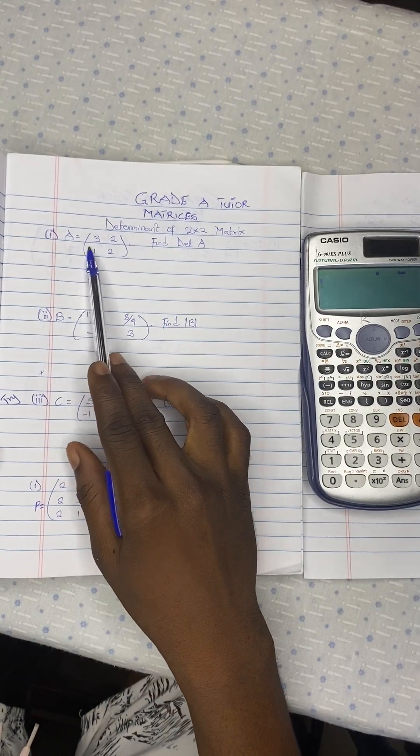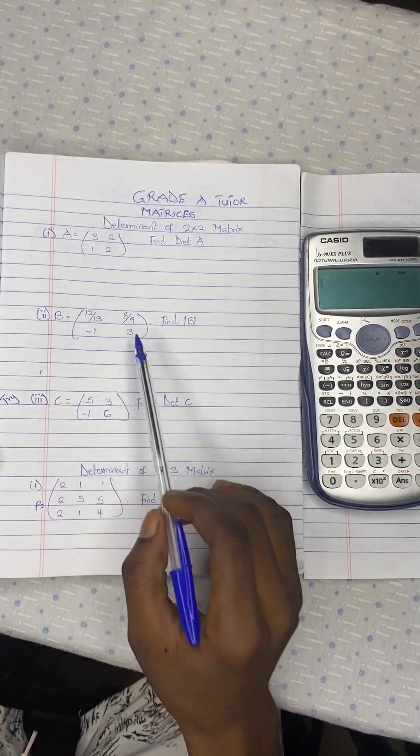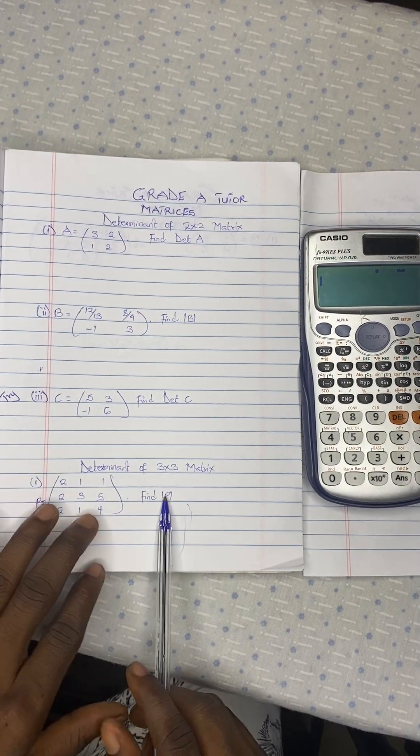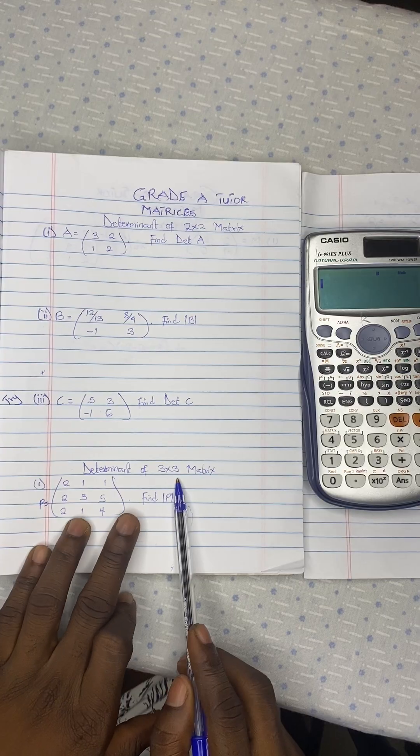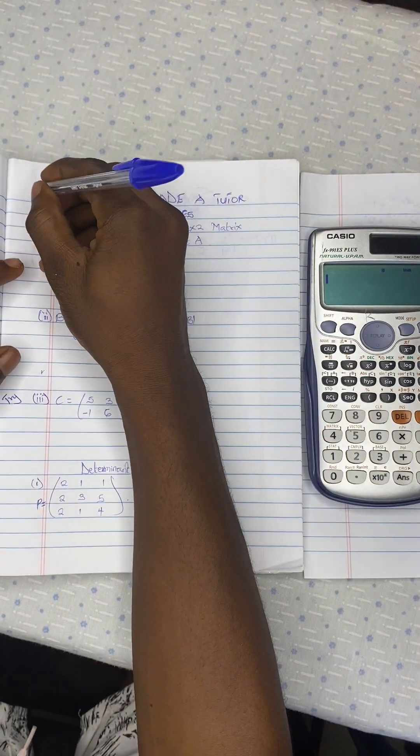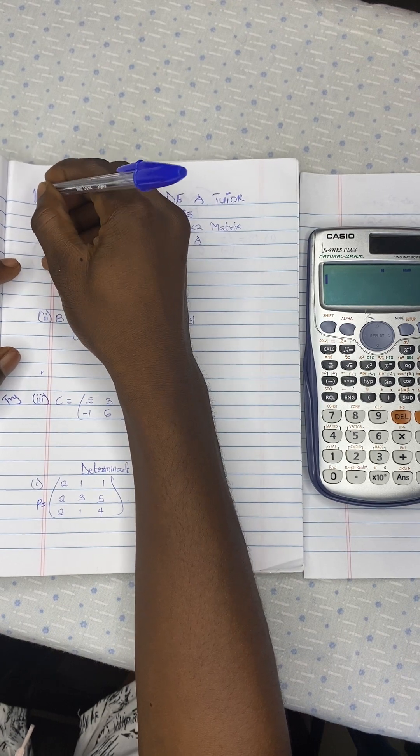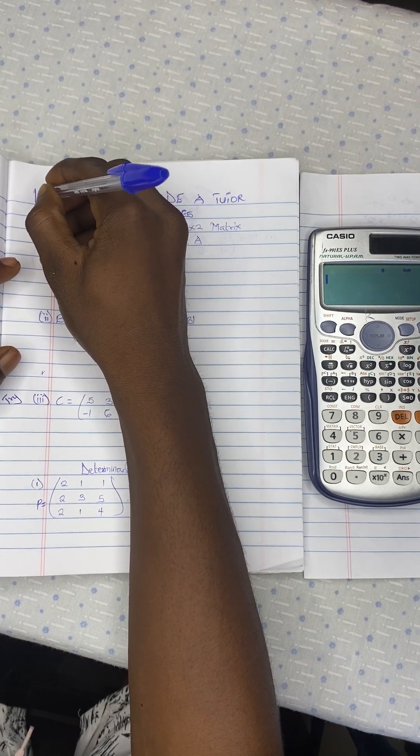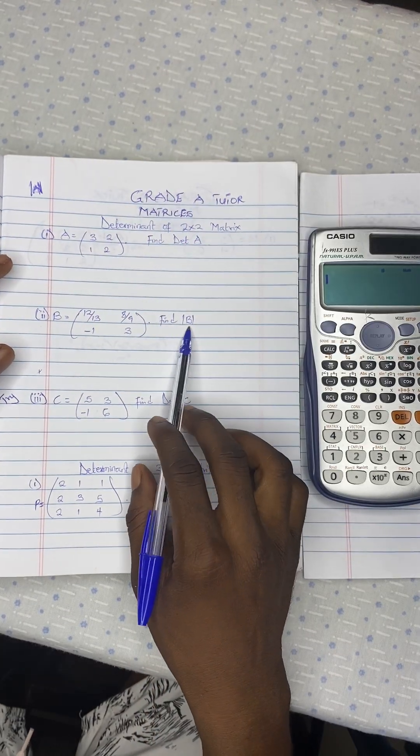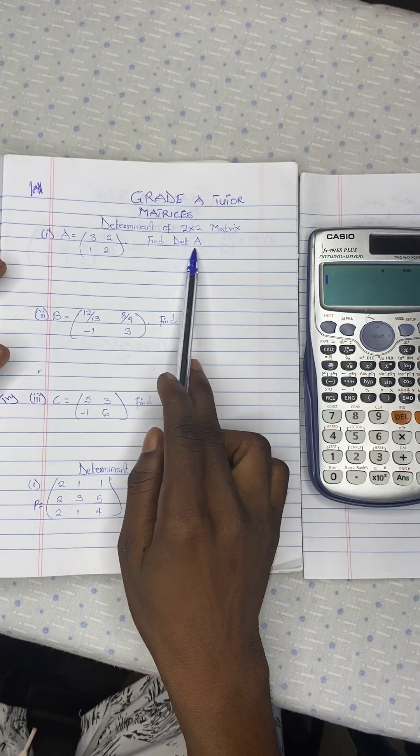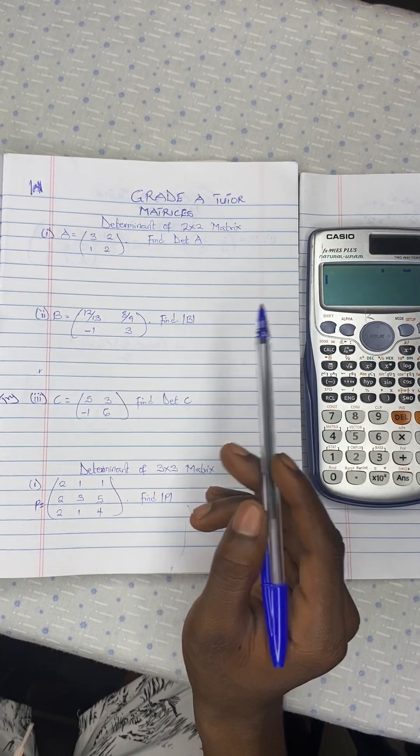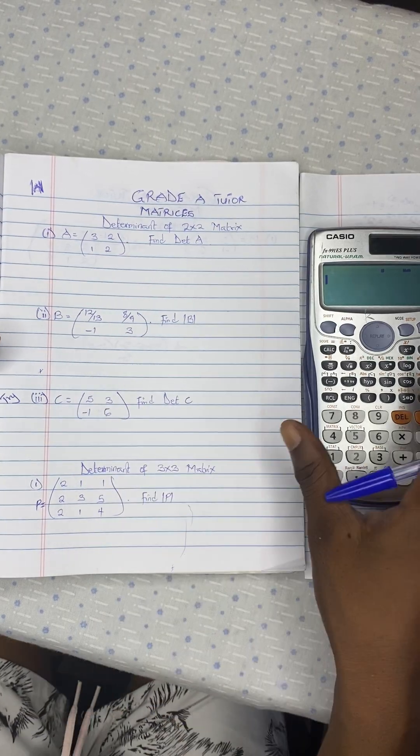So we have question 1, we have question 2, question 3, and the last one which is about 3x3 matrix. So for matrix, if you see any letter in 2 lines like this or magnitude, it is the same as determinant. So not always that you see that A, sometimes you see 2 magnitude or 2 length like this. It means determinant. Okay, so let's start.